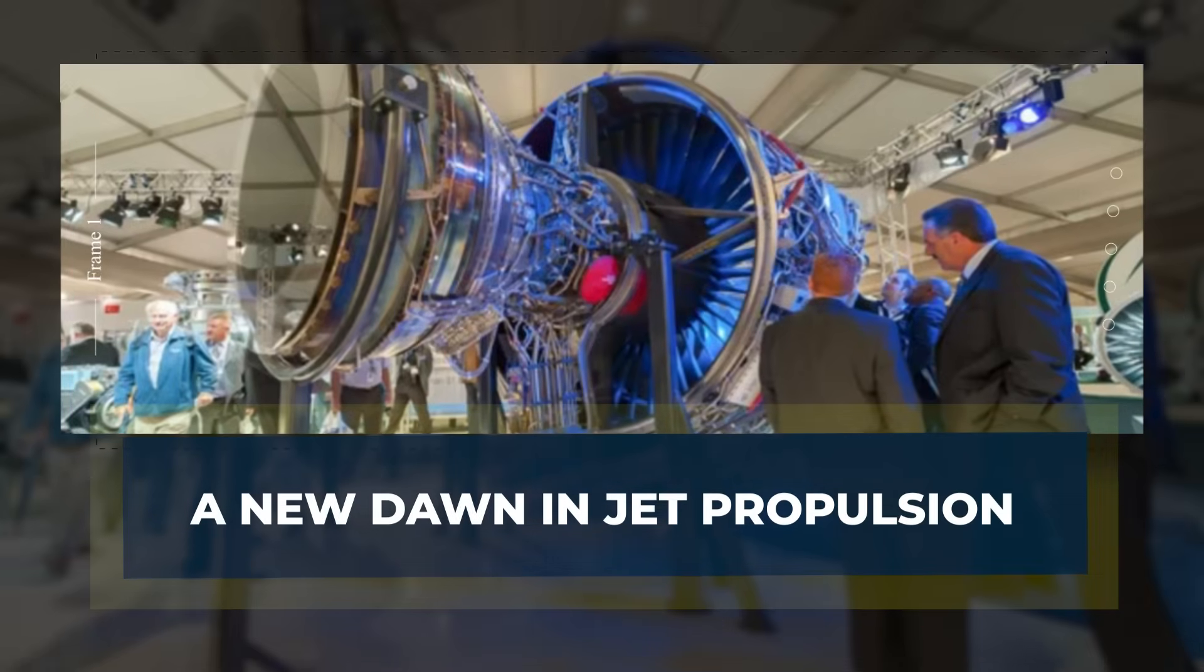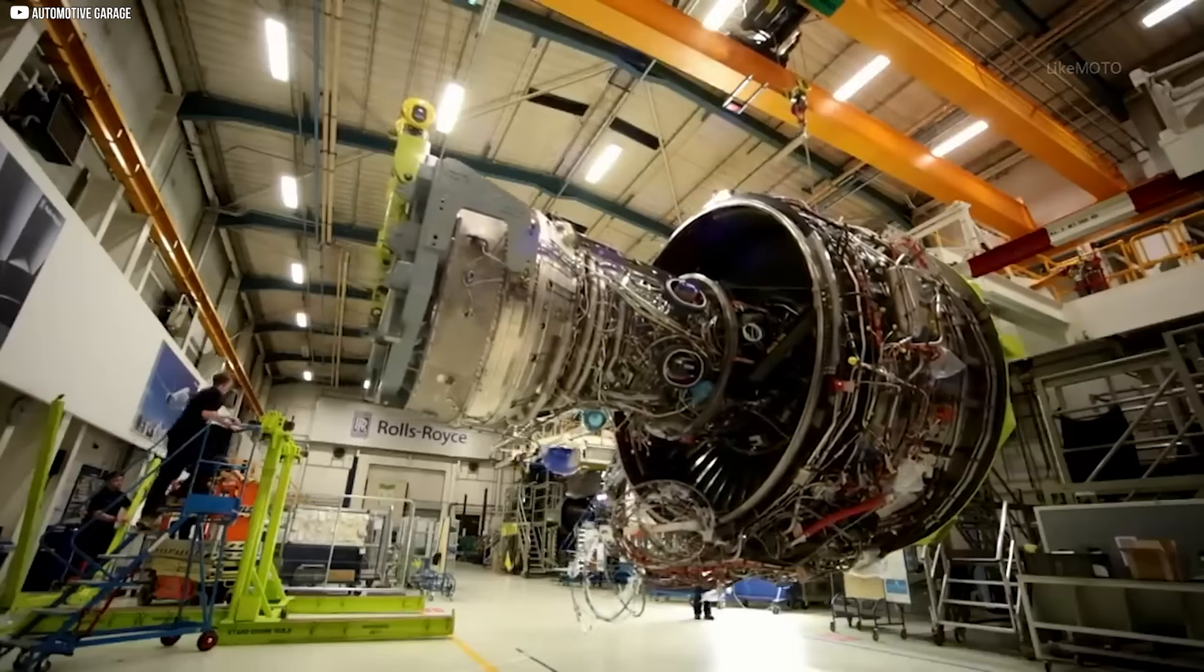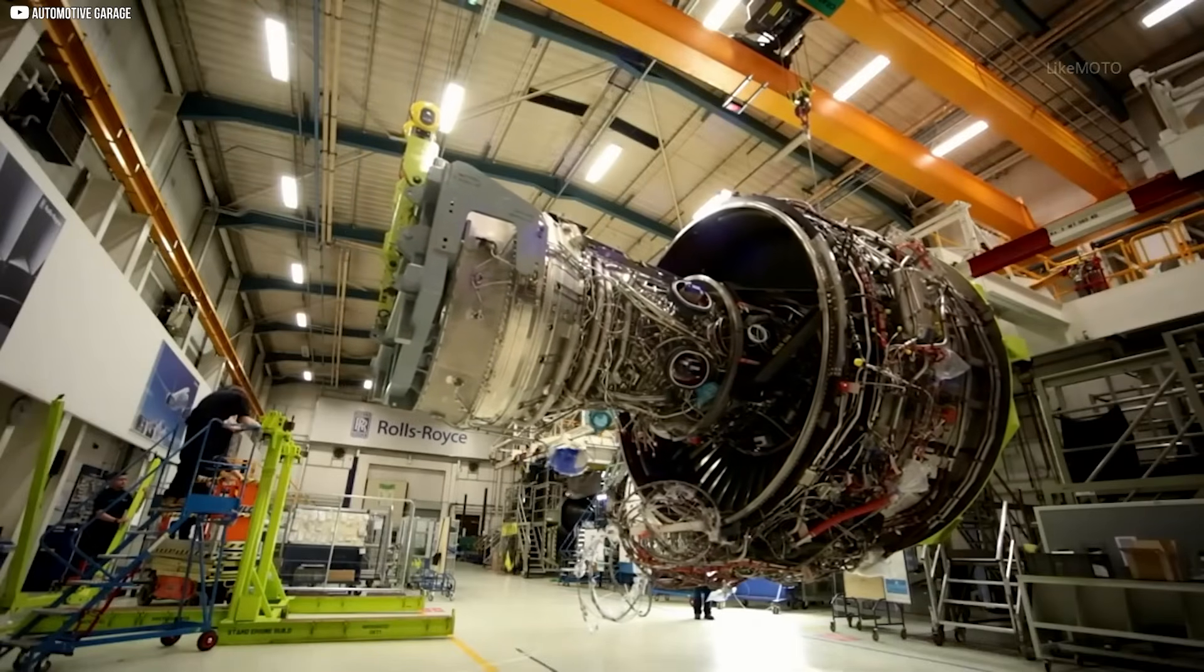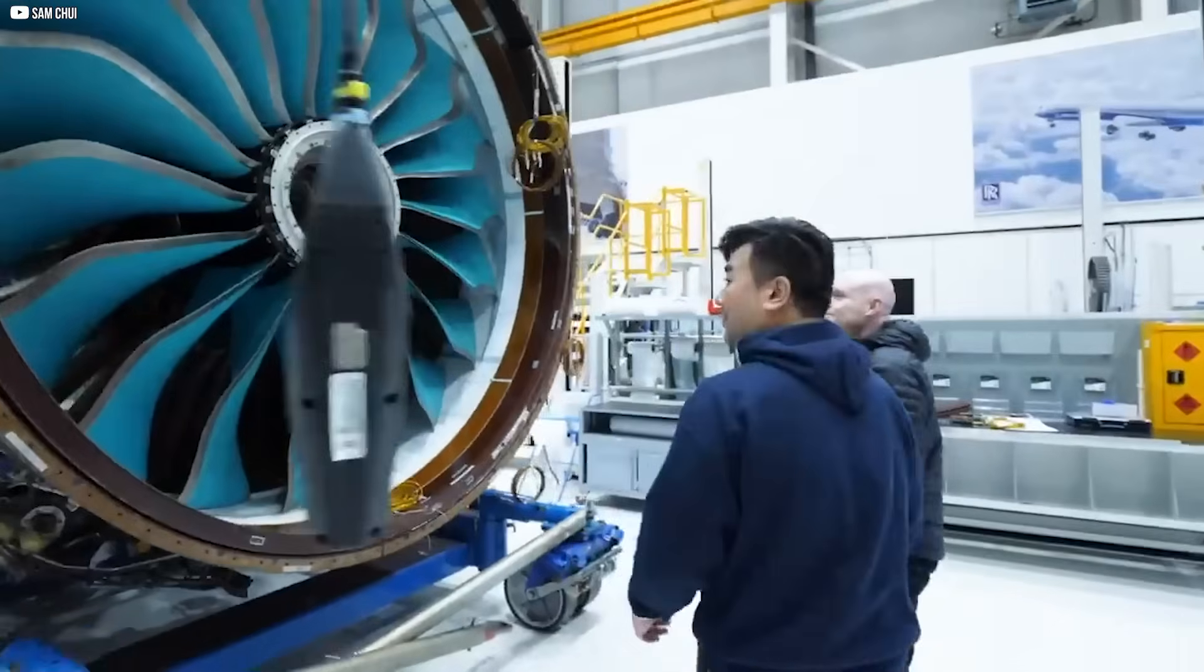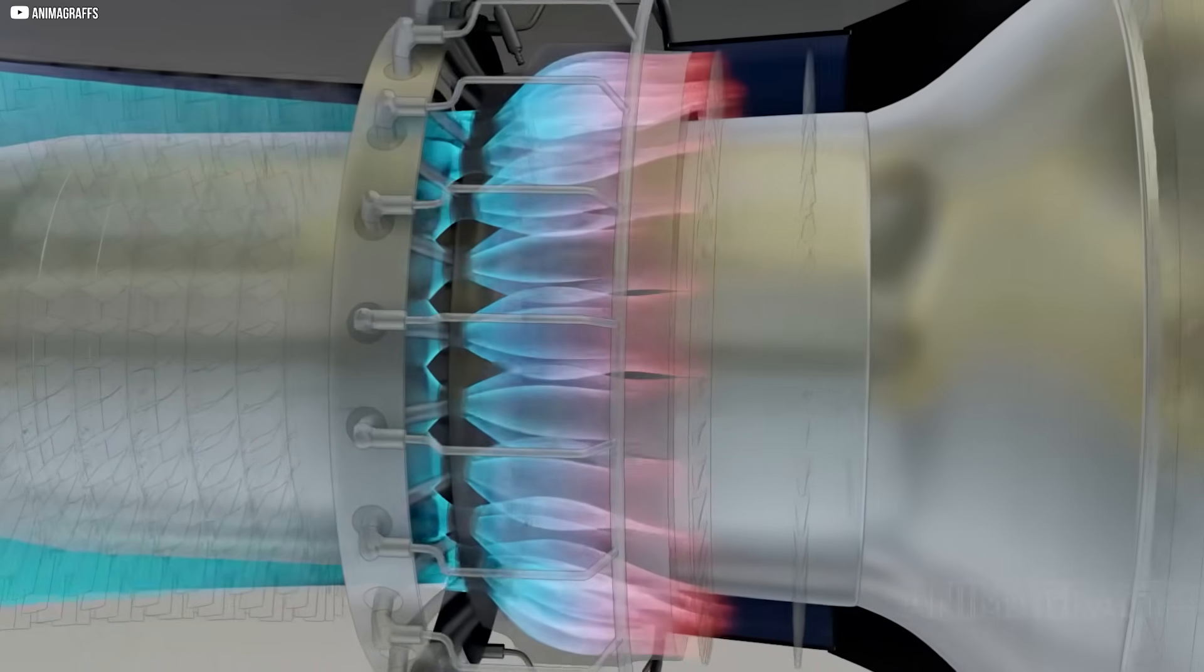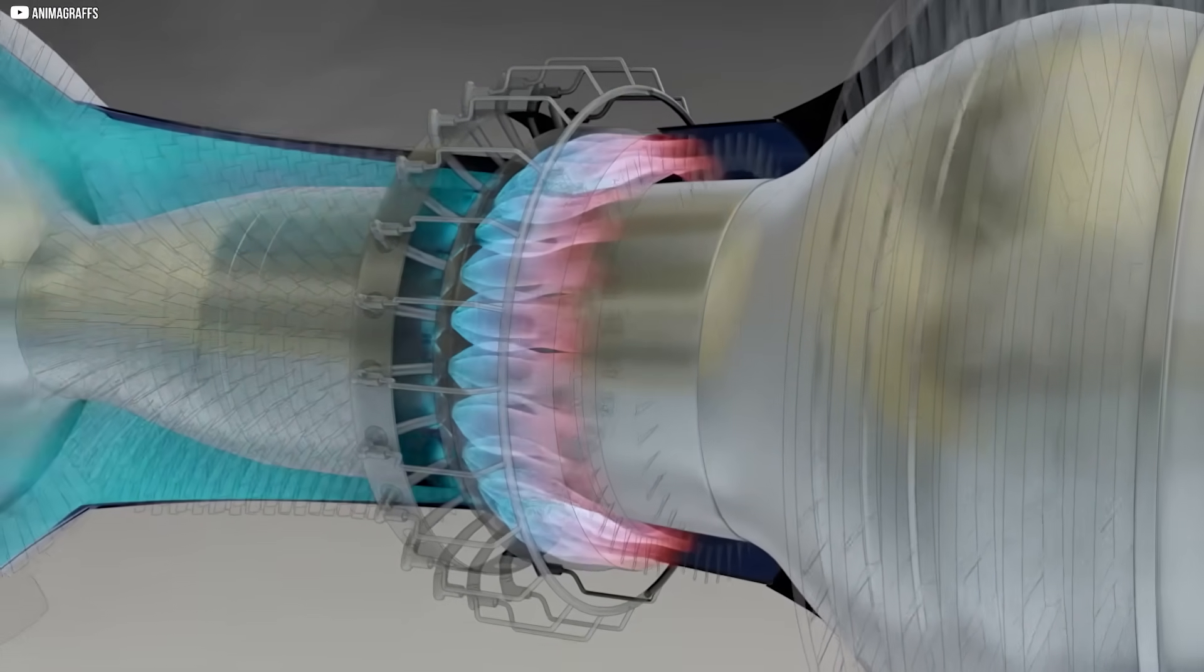A New Dawn in Jet Propulsion. The Rolls-Royce hydrogen jet engine marks a bold leap forward in aviation technology. Unlike traditional engines that burn fossil fuels, this power plant runs entirely on hydrogen, a fuel that, when combusted, releases only water vapor instead of harmful greenhouse gases.